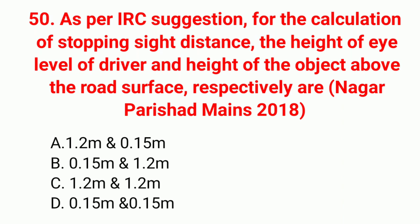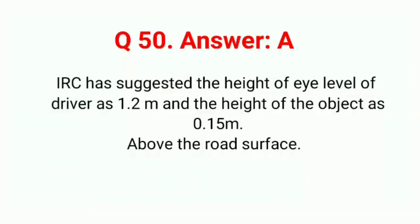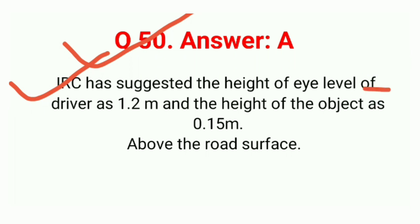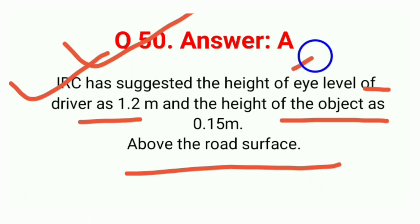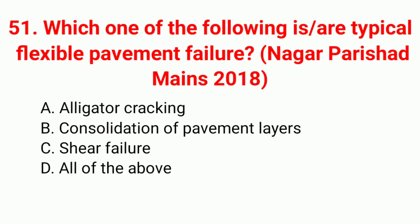Question 50: As per IRC, for calculation of stopping sight distance, the height of eye level of driver and height of object above road surface respectively are — correct answer option A: 1.2 m and 0.15 m. IRC has suggested height of eye level of driver as 1.2 m and height of object as 0.15 m above the road surface.